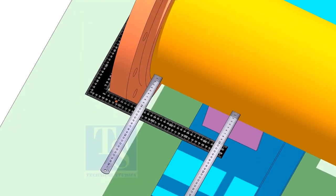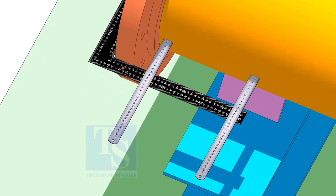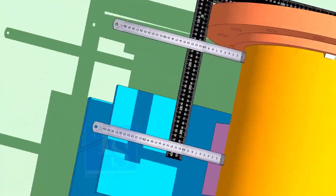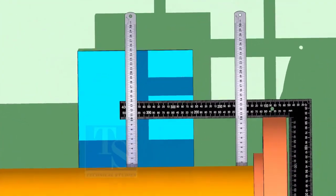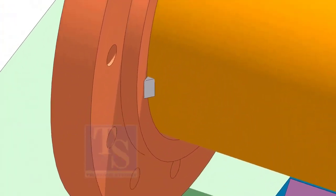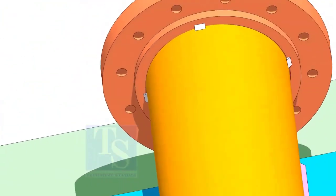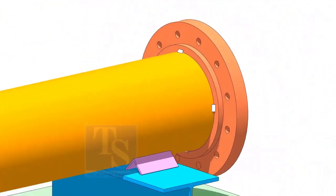Now, correct the squareness on the side and tack weld on both sides. Check the squareness on the sides.